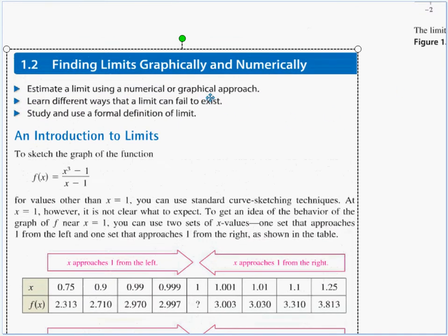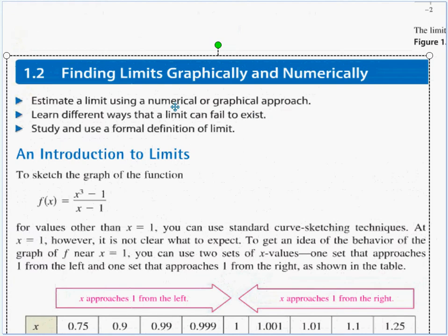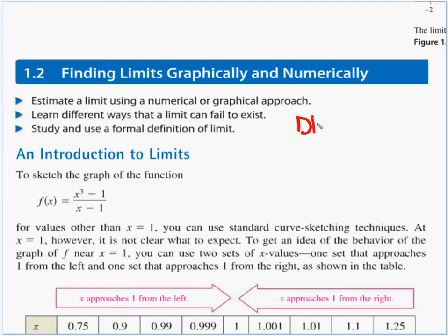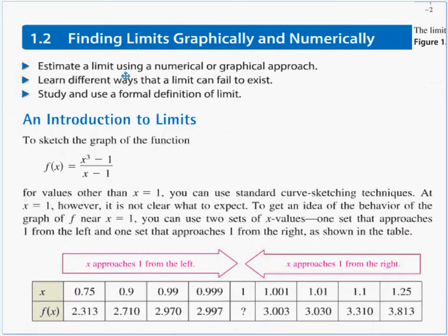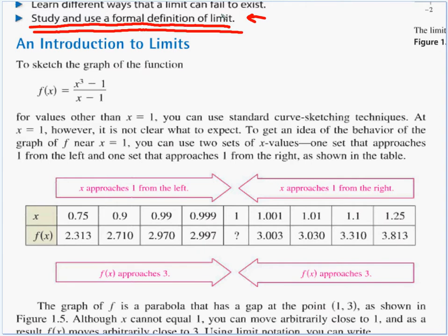Here's where the book starts: Section 1-2, limits numerically and graphically. Three bullet points: estimate a limit from a numerical or graphical approach; learn different ways that a limit can fail to exist — we'll abbreviate that DNE; and study a formal definition of a limit. This class is a prep class for the AP test, which does not cover the formal definition of a limit, so we are going to skip that.